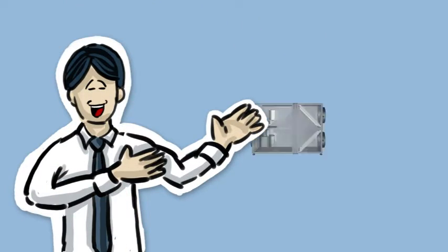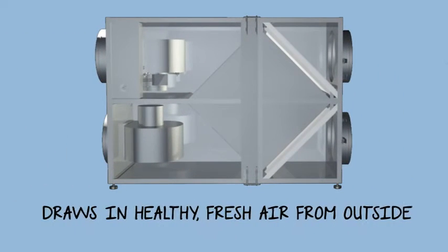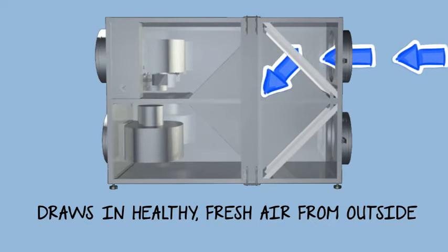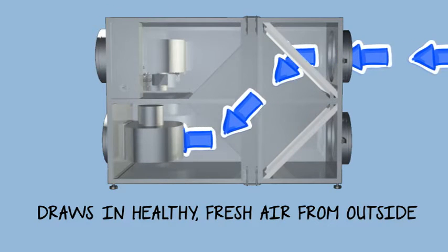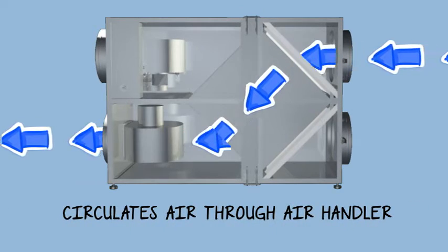Your local authorized dealer installs the BreatheEasy ERV near your home's air handler or furnace. The system will then draw in healthier, fresh air from outside the home, which it will effectively condition and filter before it circulates the new air throughout your home.